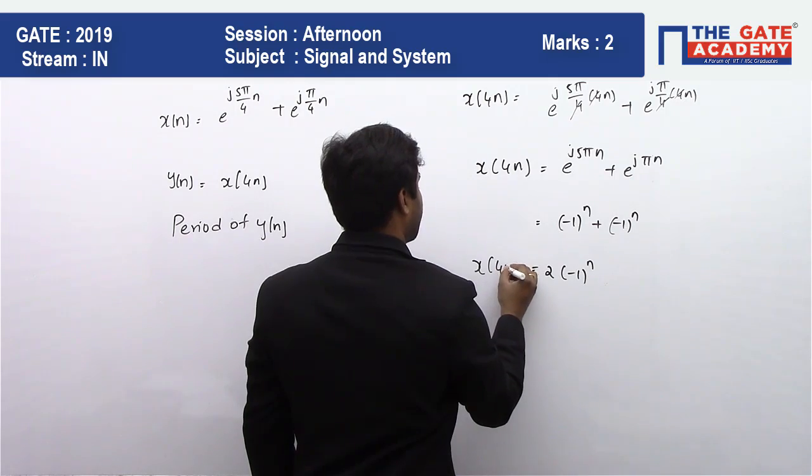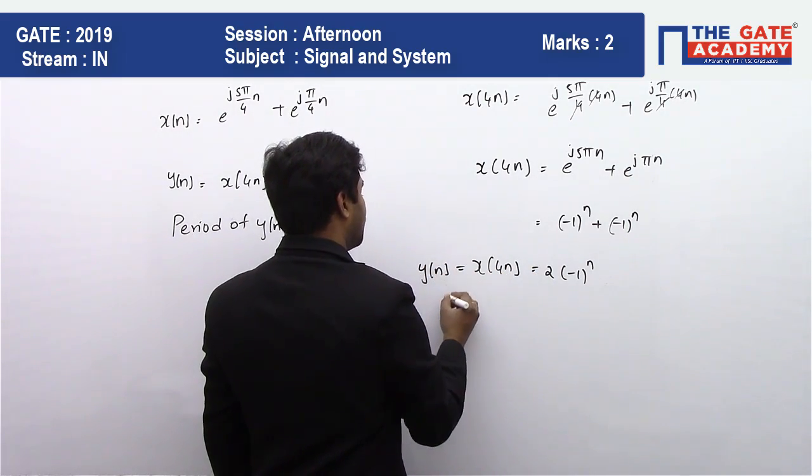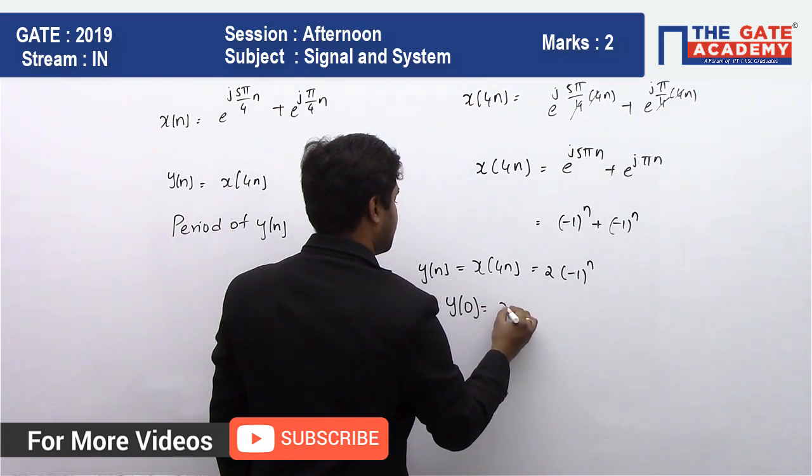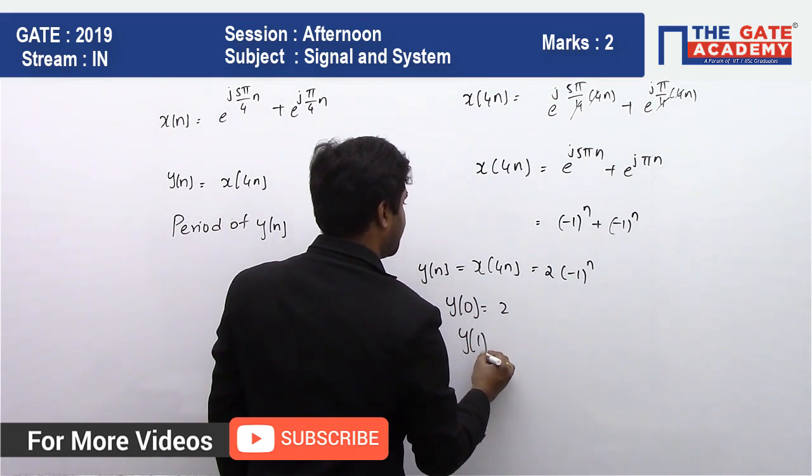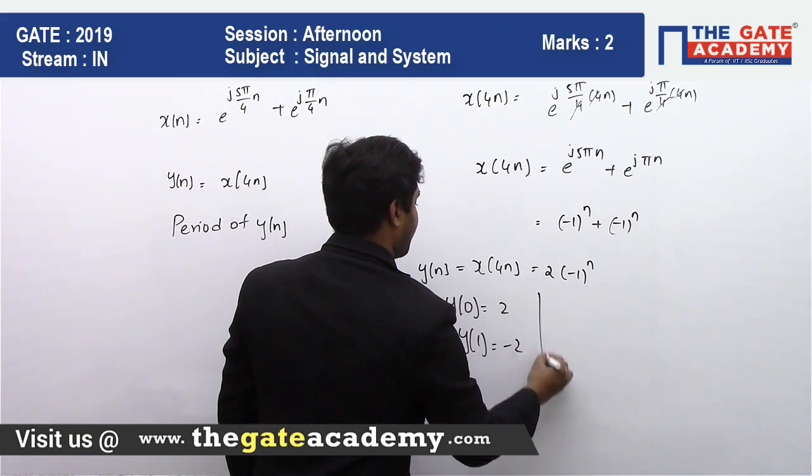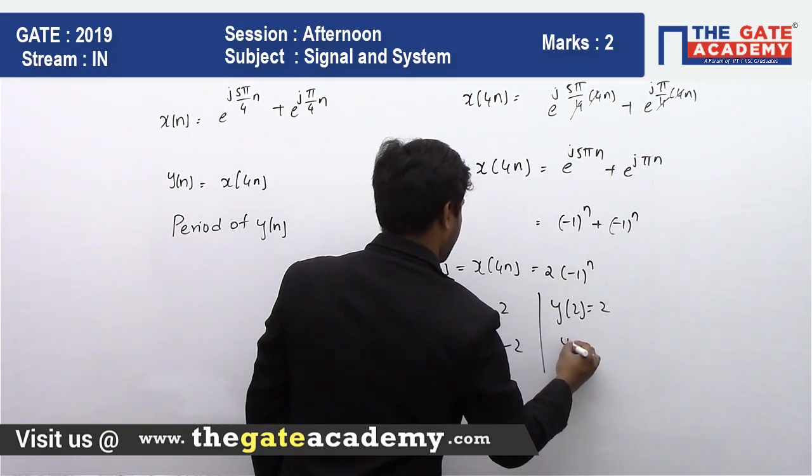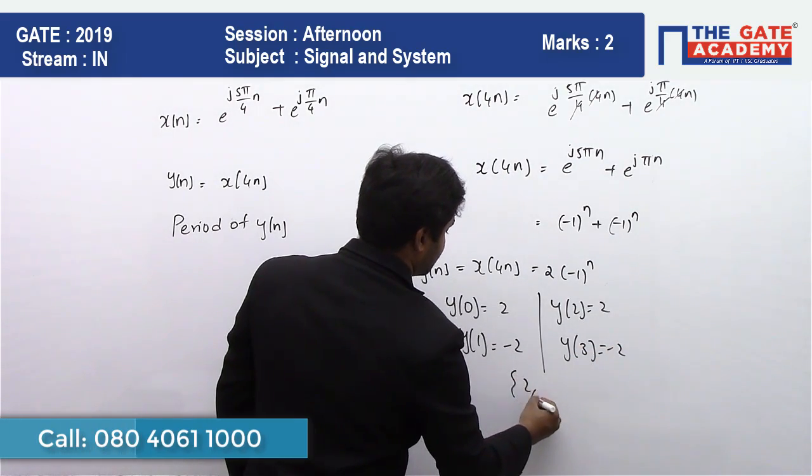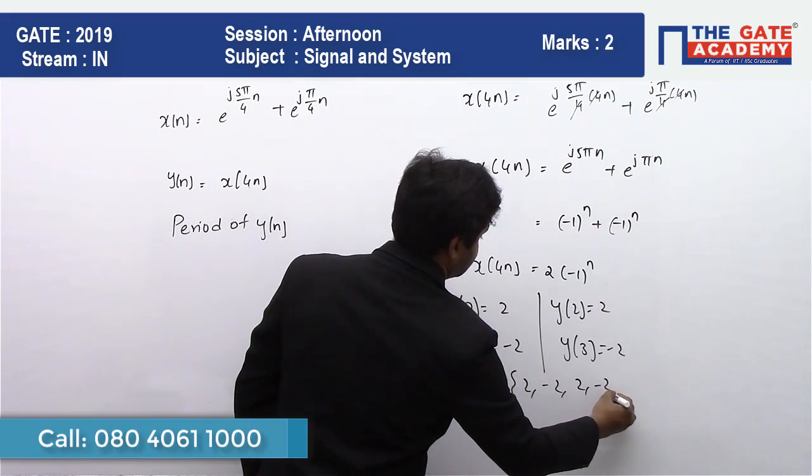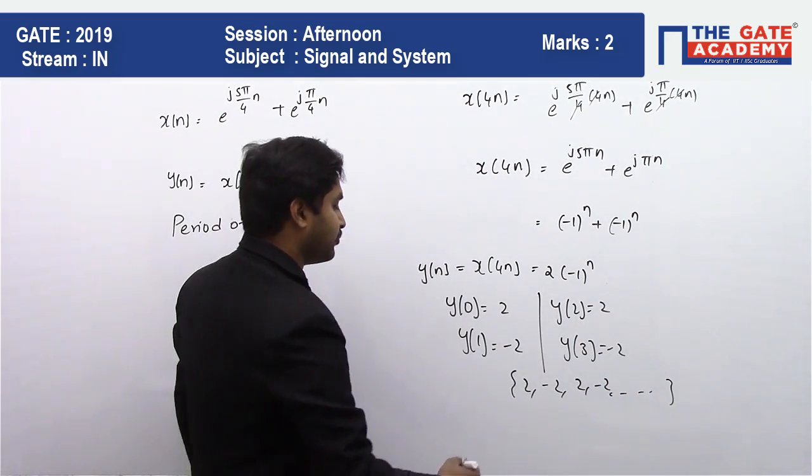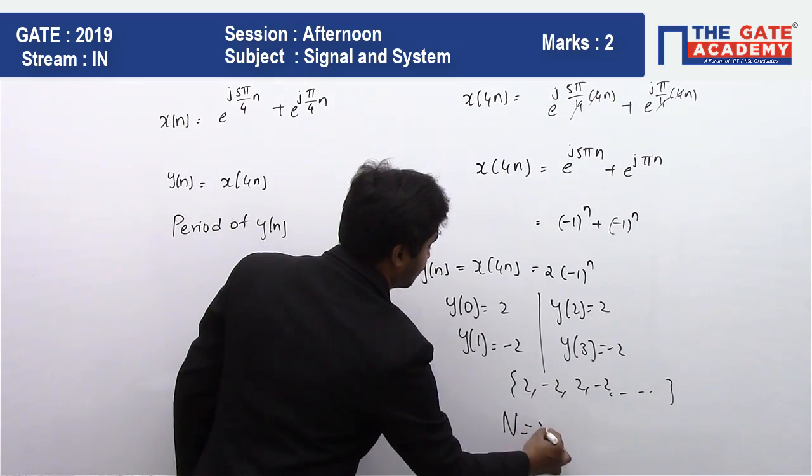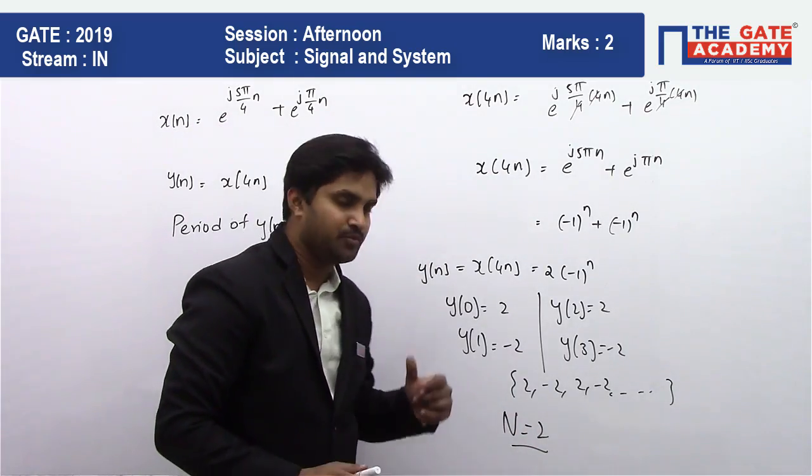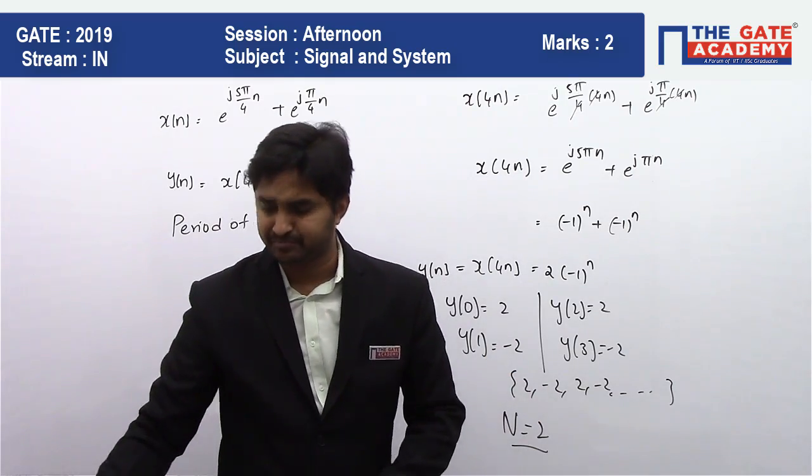And we know y(0) is going to be equal to 2, and y(1) is going to be equal to -2, y(2) is equal to 2, and y(3) is equal to -2, and so on. So you can see 2, -2, 2, -2, this is how the signal is going to repeat itself. So therefore, the period of the signal is going to be equal to 2. So the answer for this particular question is 2, because that is what has been asked.